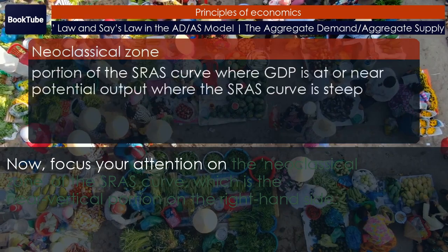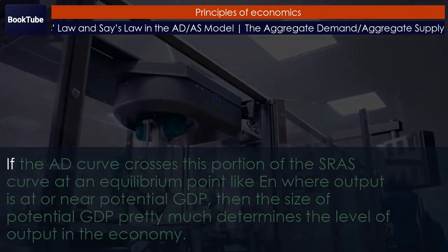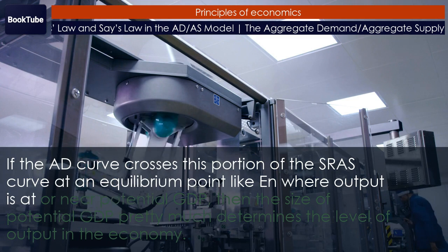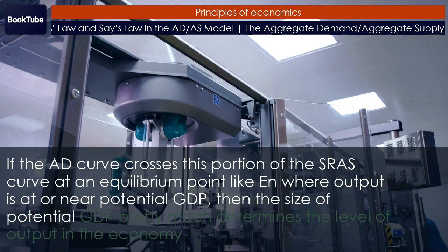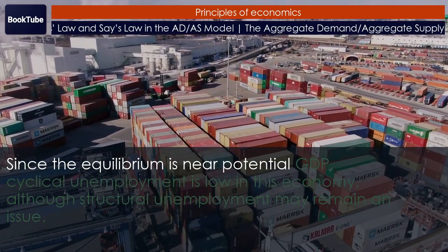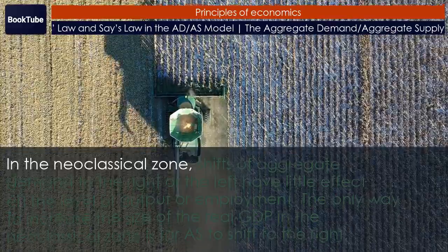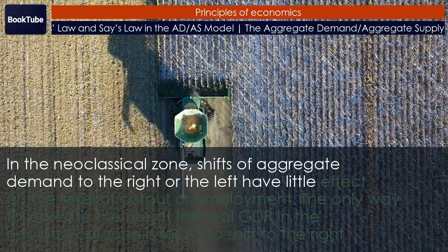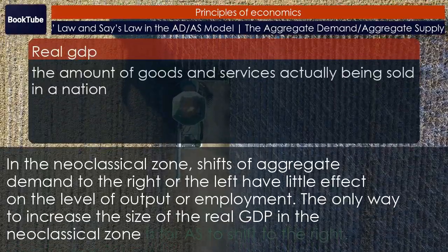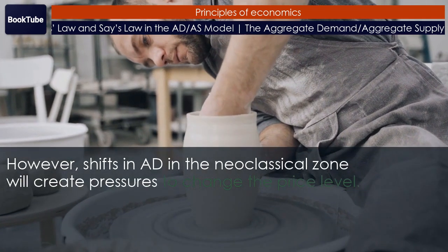Now focus your attention on the Neoclassical Zone of the SRAS curve, which is the near-vertical portion on the right-hand side. If the AD curve crosses this portion of the SRAS curve at an equilibrium point like N, where output is at or near potential GDP, then the size of potential GDP pretty much determines the level of output in the economy. Since the equilibrium is near potential GDP, cyclical unemployment is low, although structural unemployment may remain an issue. In the Neoclassical Zone, shifts of aggregate demand to the right or left have little effect on the level of output or employment. The only way to increase the size of real GDP in the Neoclassical Zone is for the SRAS to shift to the right. However, shifts in AD in the Neoclassical Zone will create pressures to change the price level.